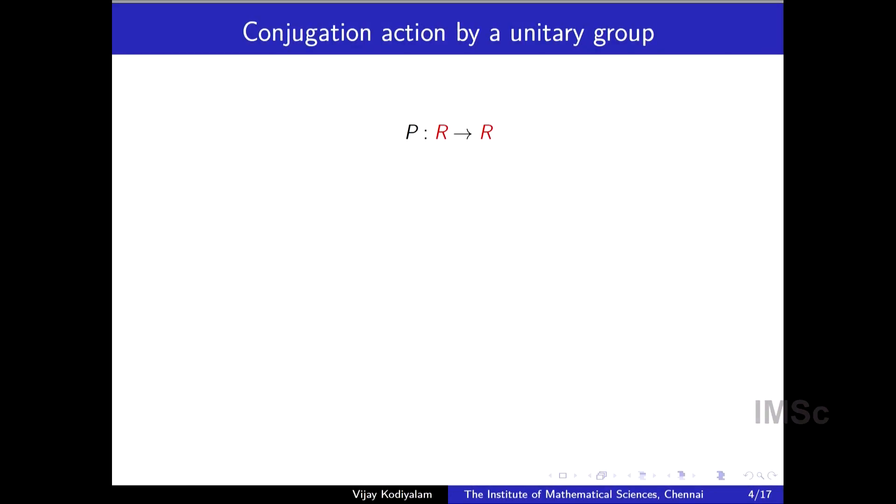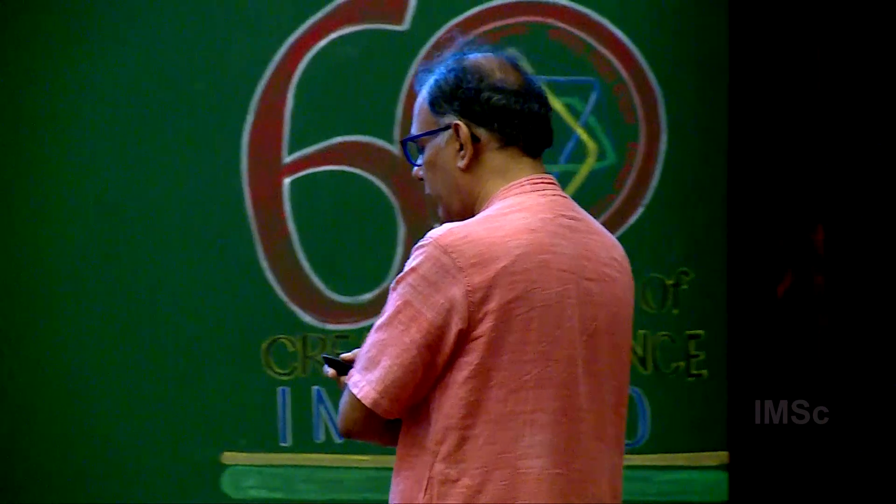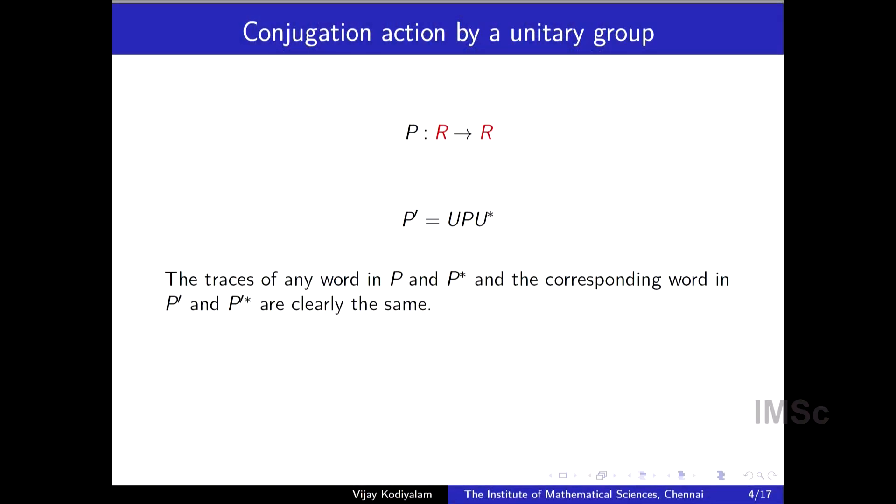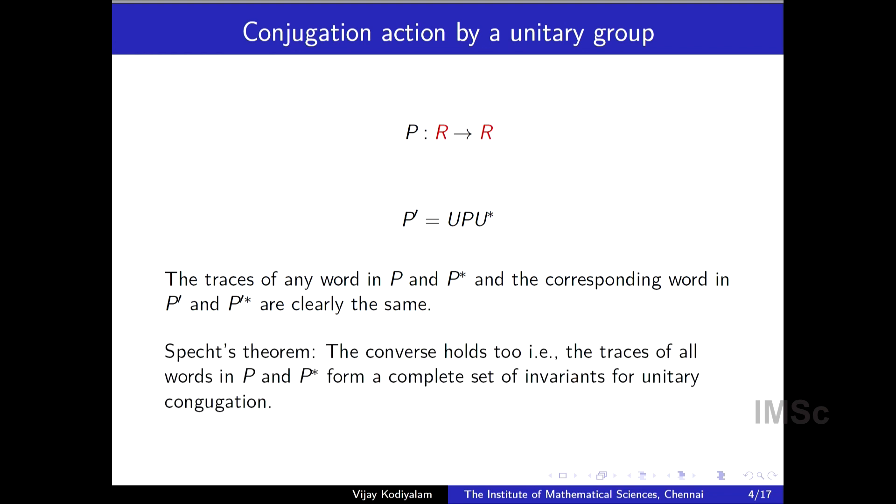This is one problem. Let me change the problem slightly and go to what seems like a simpler problem. And this is where you have an operator on a space. So it goes from R to itself. And again, the symmetries of the space, the unitary group of that size acts on P, this time by U P U star. So it changes P by conjugation by U. And here we can ask, what are the invariants? So looking back at the previous example, traces, previously traces of certain things in Q and Q star were invariants. Here we will see that the traces of any word in P and P star and the corresponding word in P dash and P dash star are the same. Because these two words differ only by a conjugation by U and so the trace remains invariant. And once again, this is called Specht's theorem. This says that the converse holds as well. So if you know the traces of all words in P and P star, then you know P up to unitary conjugation. So these are the two examples that I want to generalize.